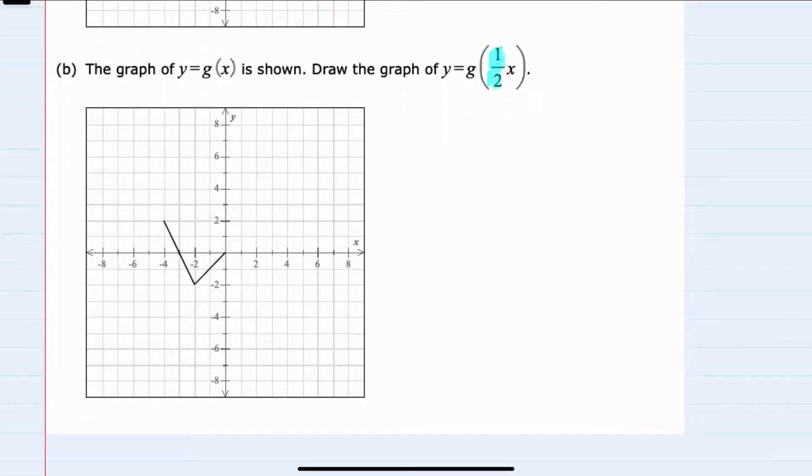And then for the second graph, we notice that it again has a one half, but this time it is inside the function g of x that's given. So here again, we can work with these three points. We have negative 4, 2, negative 2, negative 2, and 0, 0, but this time we're taking one half of the x values.